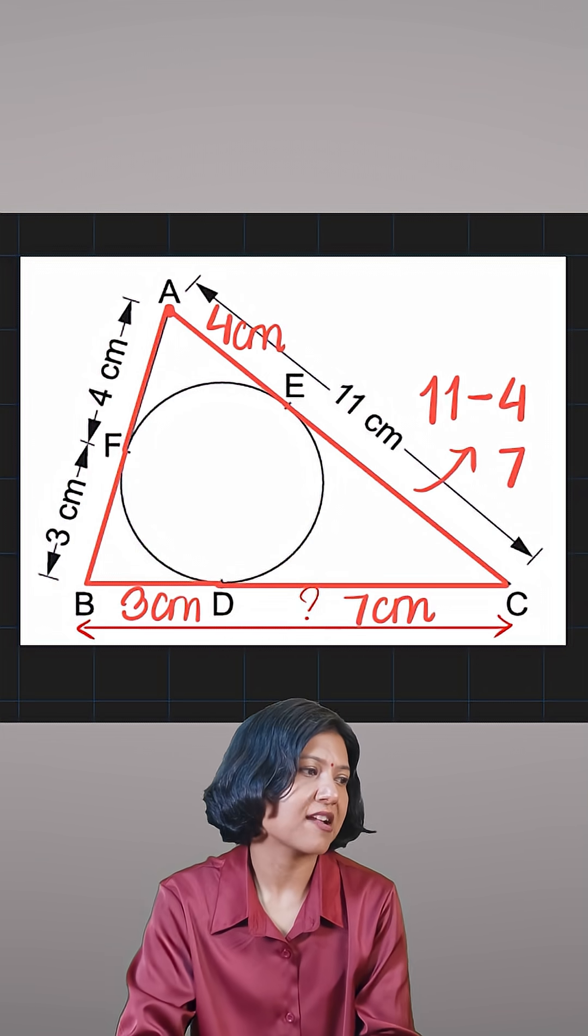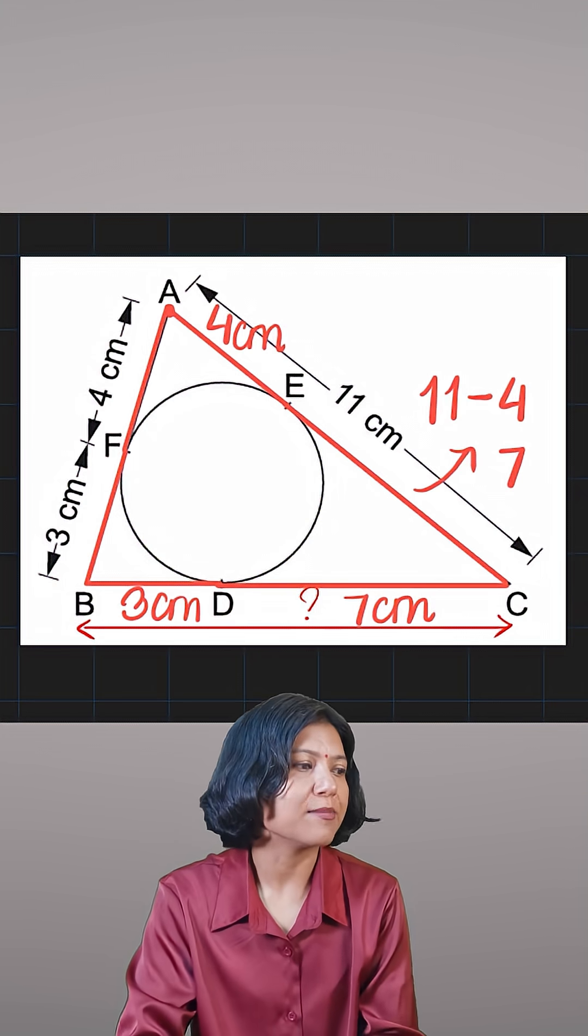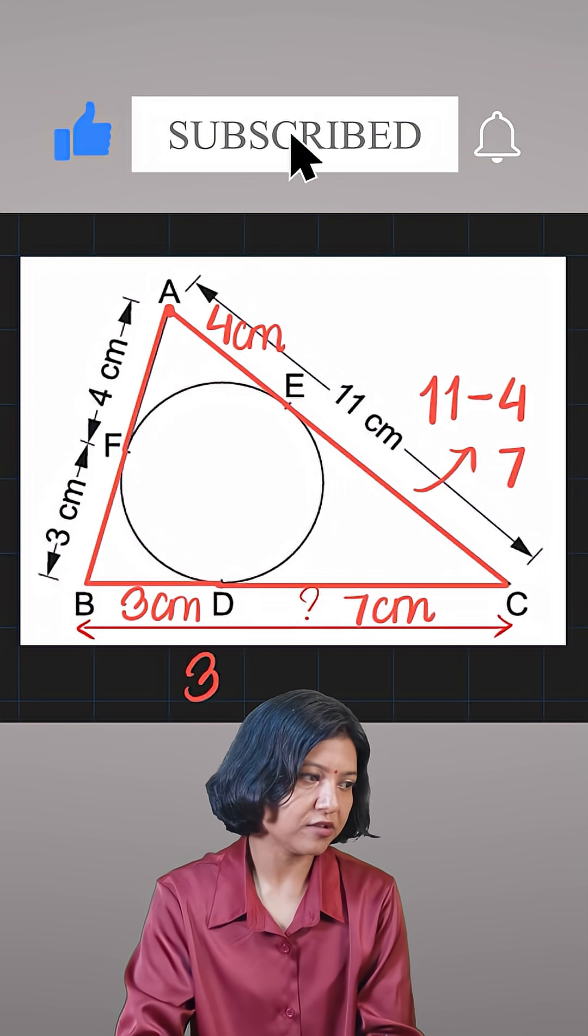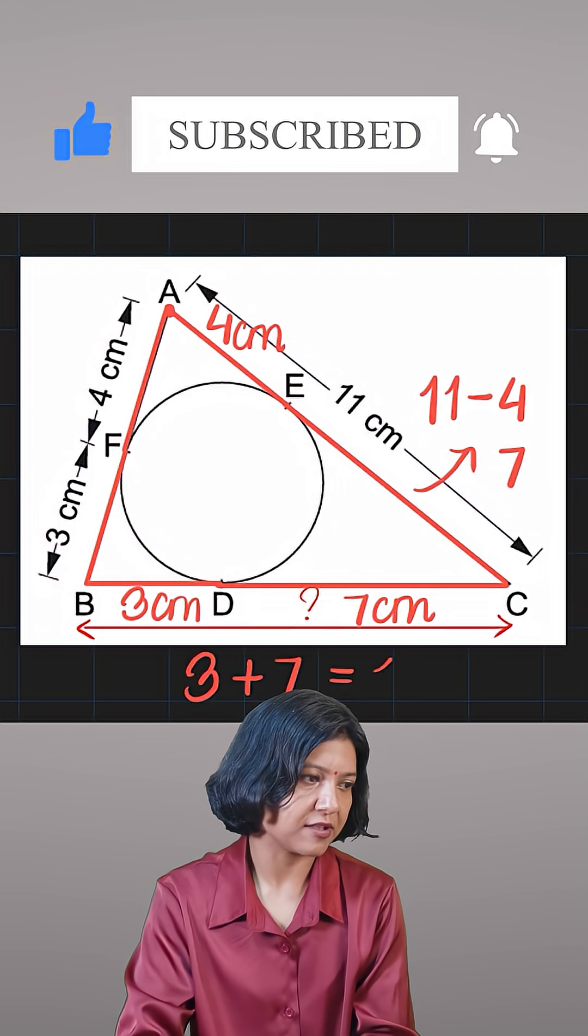So overall, the question is asking me to find the length of BC. BC has to be 3 plus 7, which is equal to 10. So the answer is 10 centimeters.